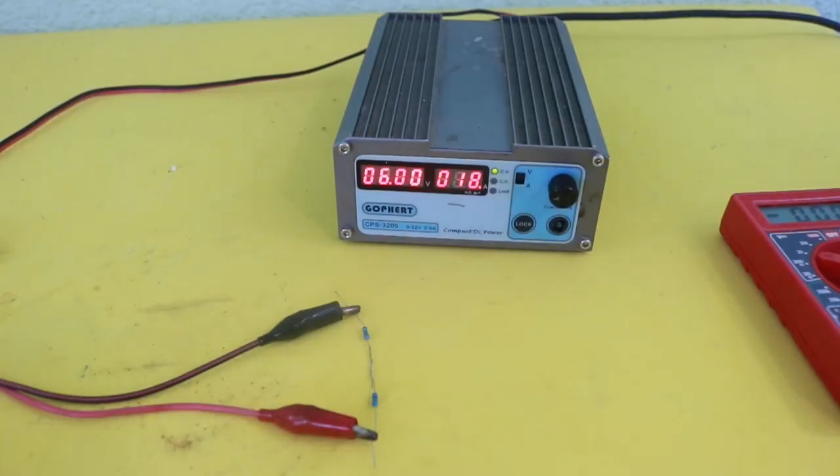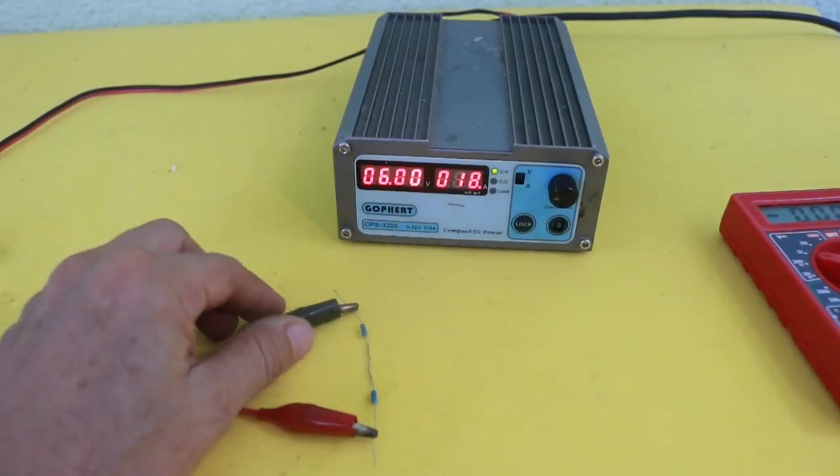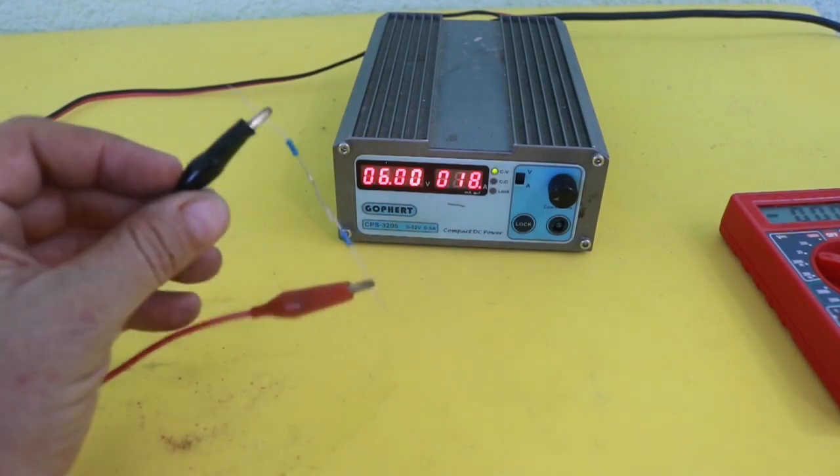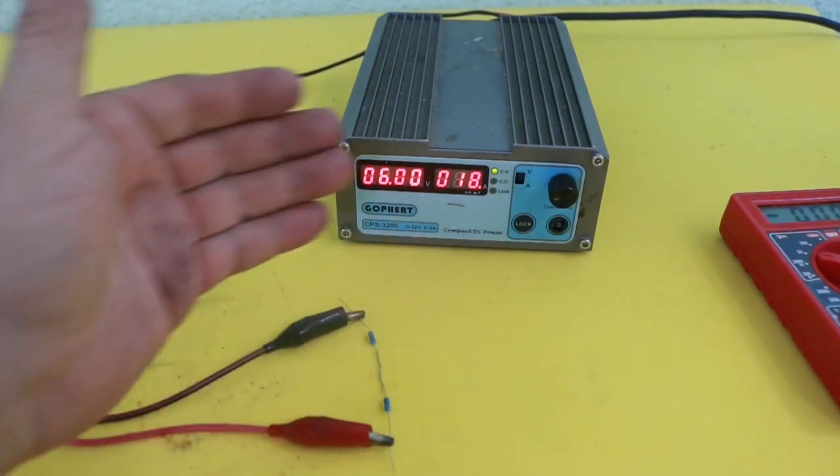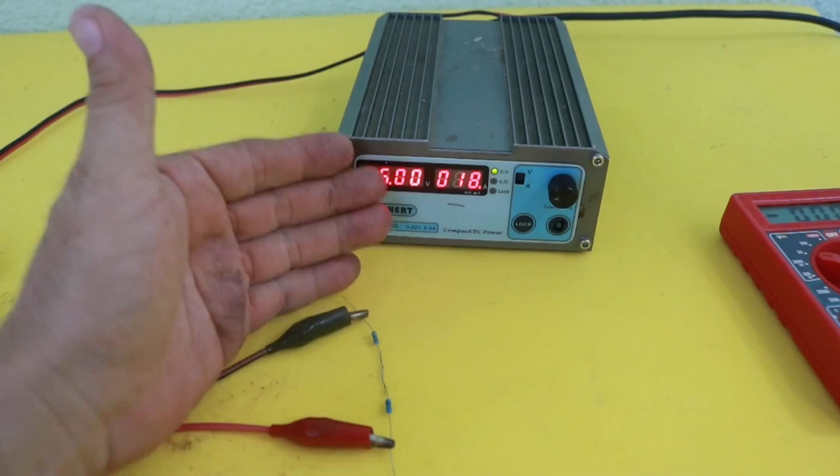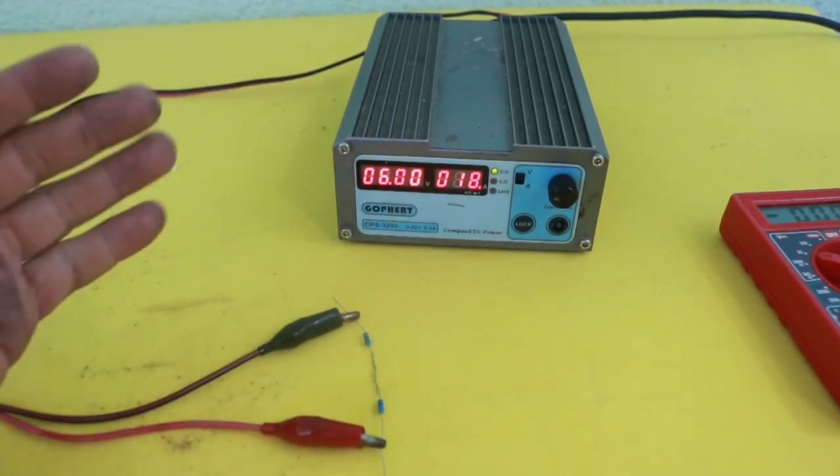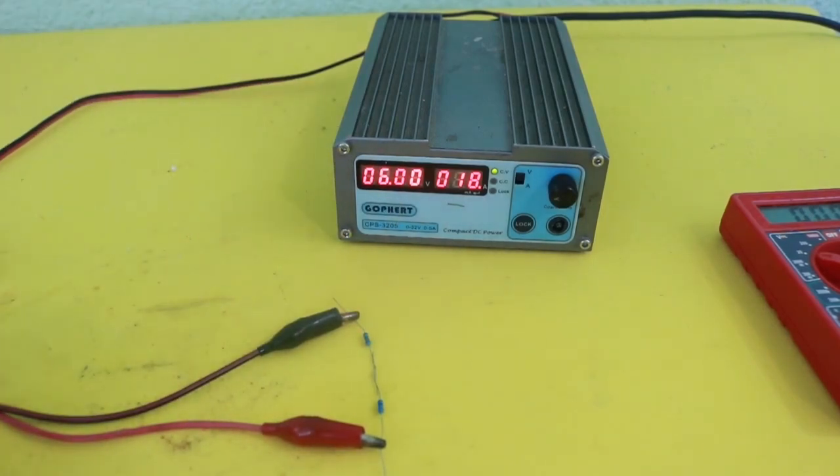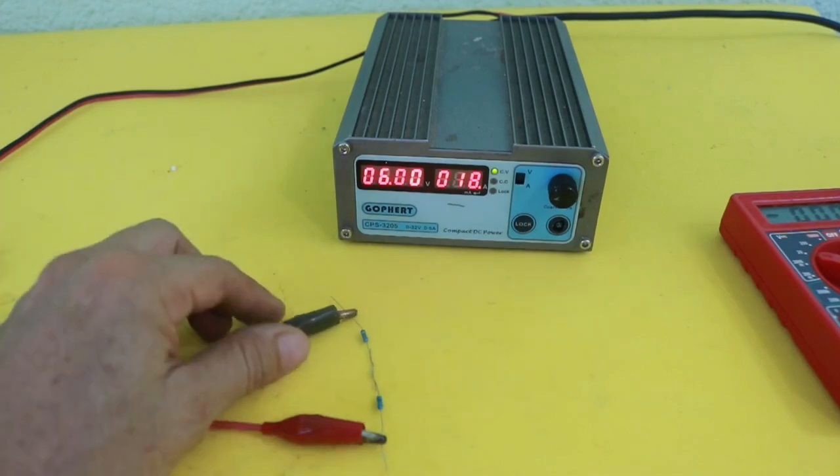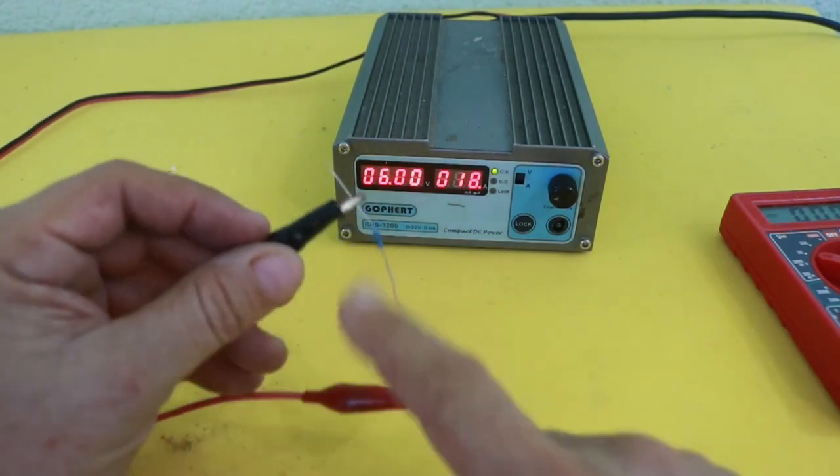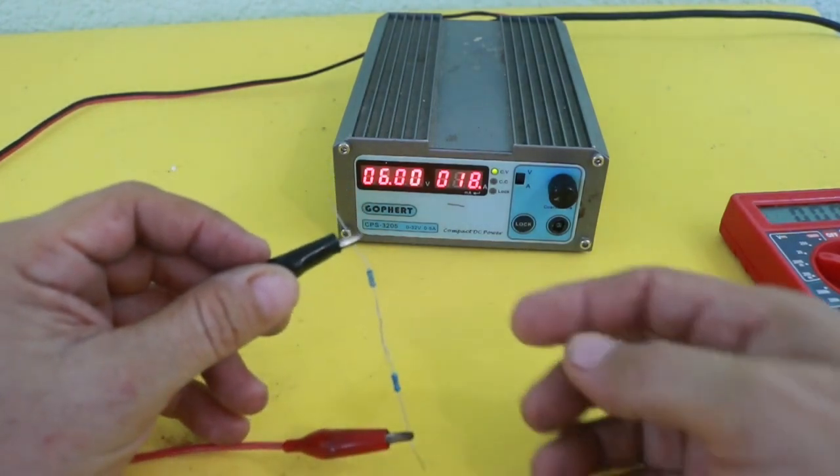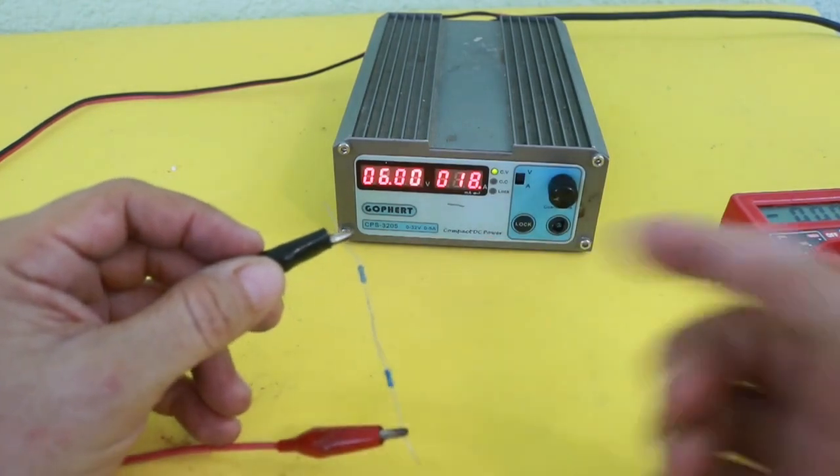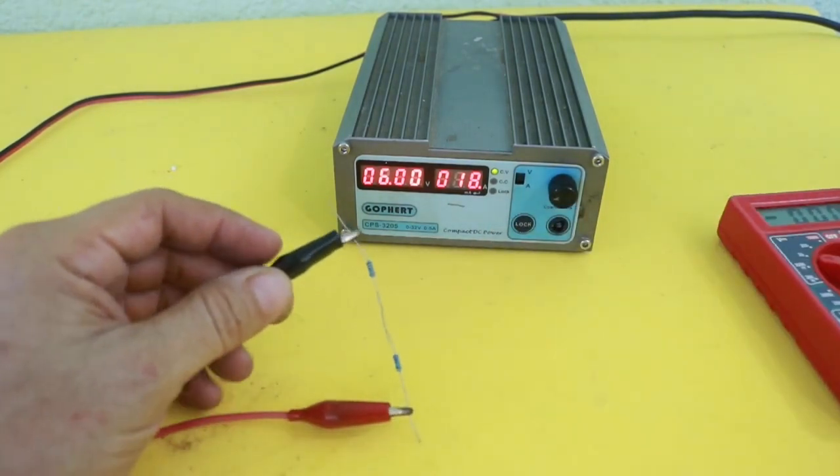Let's see the classic example, which is the resistance voltage divider. I have a voltage of 6 volts and I need less voltage to power, for example, an LED. So I make a voltage divider with two resistors. The voltage value at each resistor depends on the value of the resistors.